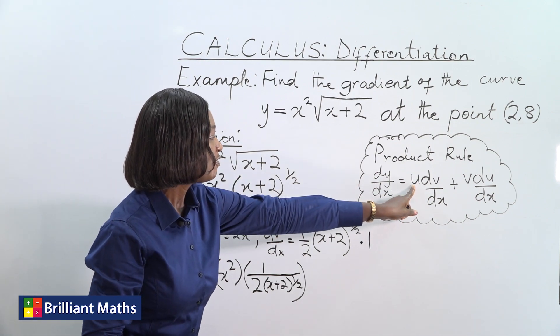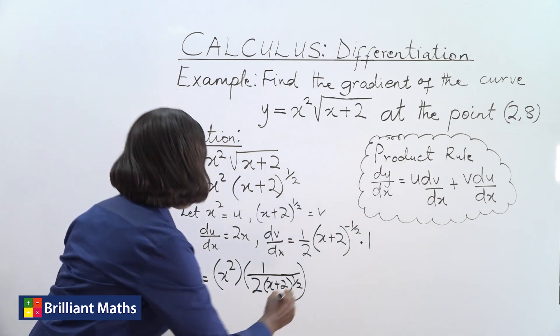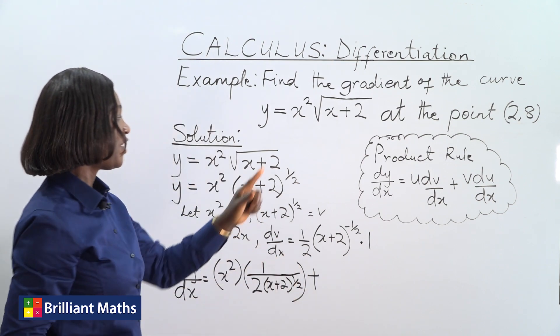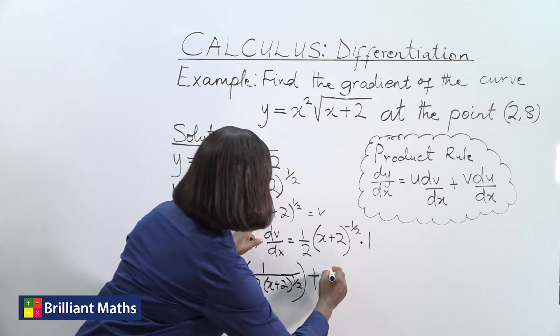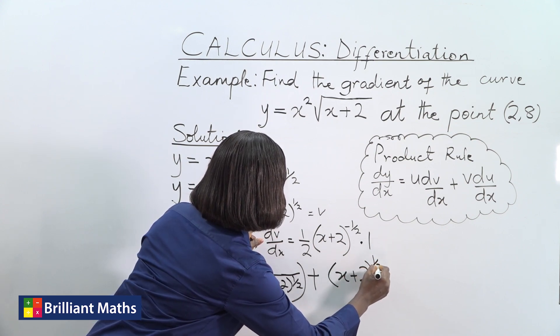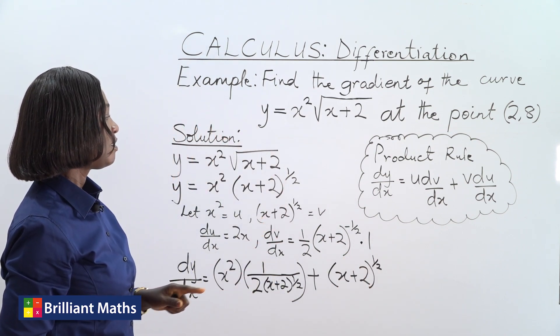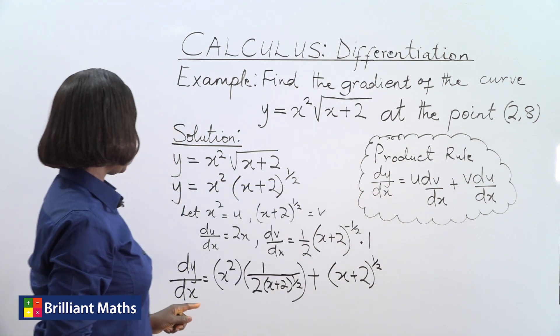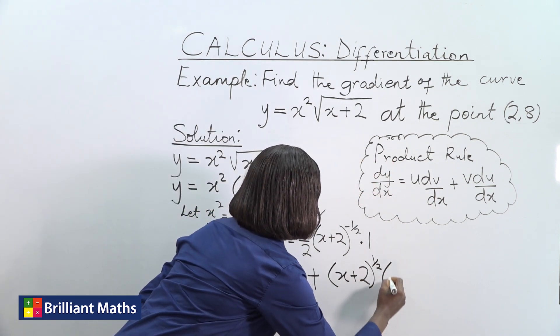So we now have u dv/dx plus v du/dx. v is x plus 2 to the power half, and du/dx is 2x.